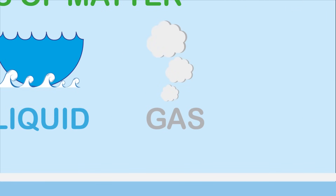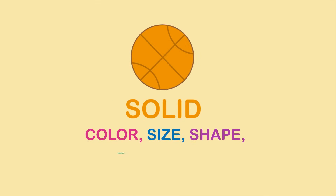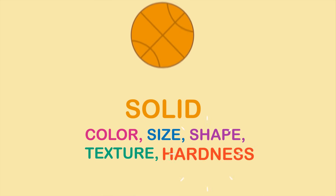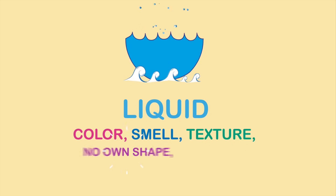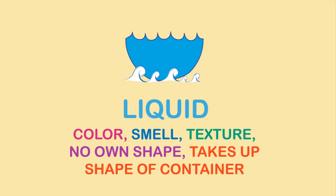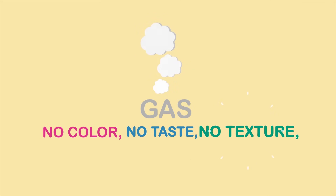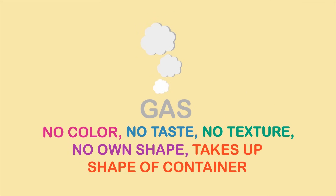Once again, the different states of matter — solid, liquid, and gas — have their own characteristics. Solid objects have color, size, shape, texture, and hardness. Liquids have color, smell, and texture; they don't have their own shape and only take the shape of their container. Gas have no color, taste, texture, or own shape; they only take the shape of what they're put in.